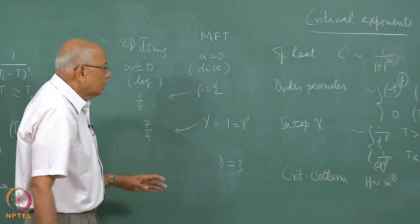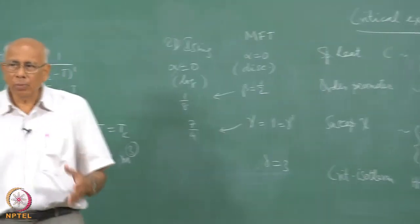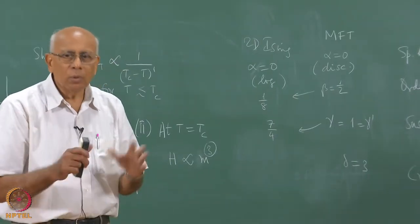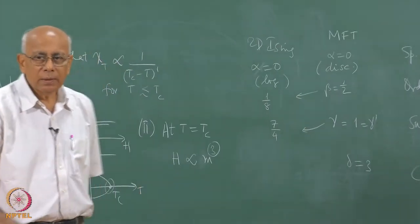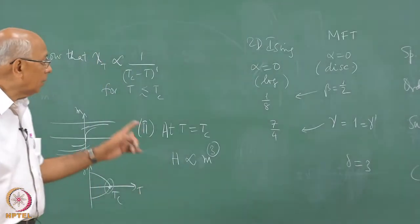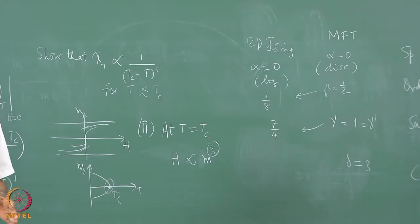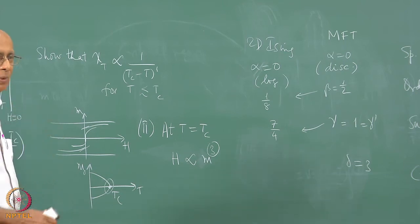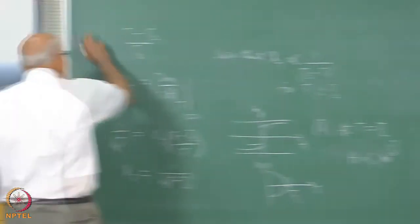What underlies this whole business is the divergence of something called a correlation length. We need to define the correlation length; that will give us a big handle on what to do next.